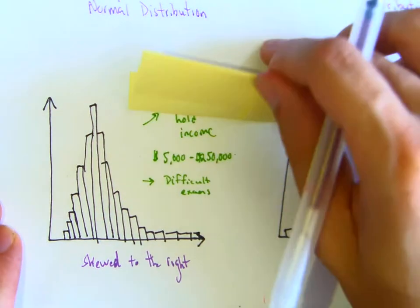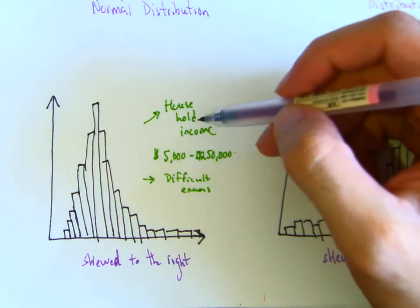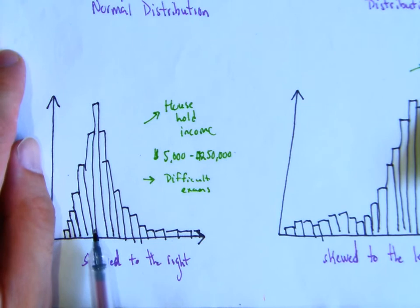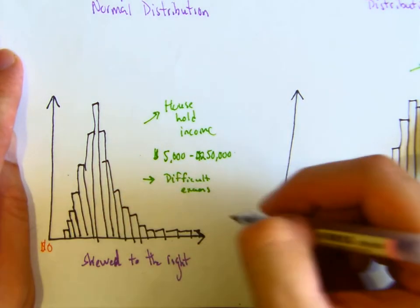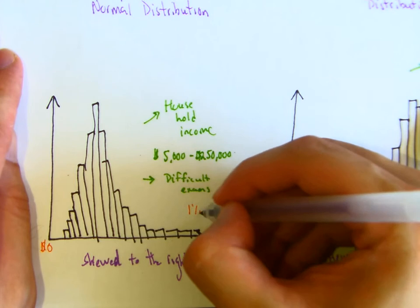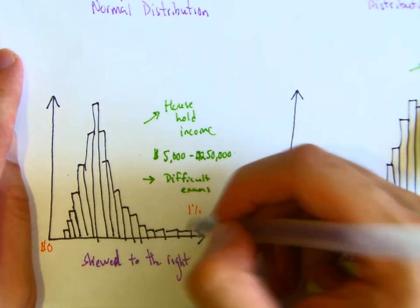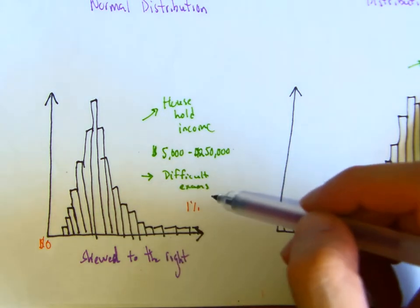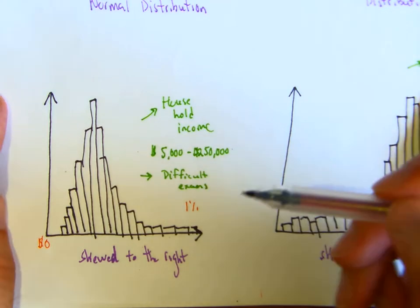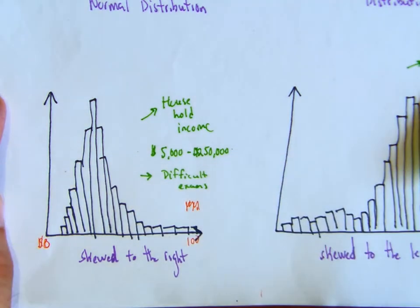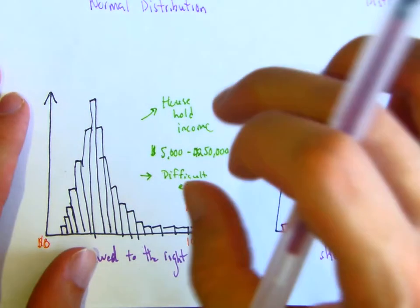Some examples of skewed right: household income — if you took how much money everyone in the world makes, a lot of people don't make much and would be on the left side, while very few — the one percent — make millions or billions and sit on the far right. Another example is a difficult exam: many students would score low, with very few scoring close to 100. Hold on to your own examples and we'll discuss in class.